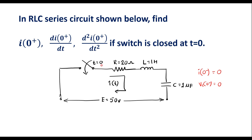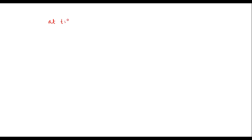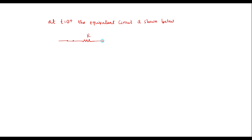Now we will assume that at t equal to 0, the switch is closed. So when the switch is closed, the current in the circuit will become i(0+). As we know, at t equal to 0+, the inductor acts like an open circuit and the capacitor acts like a short circuit. Let me draw the equivalent circuit. The inductor is open and the capacitor is short circuit, and we have the 50 volt voltage source connected here.